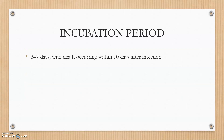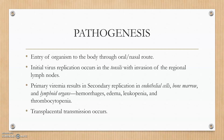The incubation period is mainly 3 to 7 days, with death occurring within 10 days after. Regarding pathogenesis: entry of the organism into the body occurs through the oral or nasal route. Initial virus multiplication occurs in the tonsils with invasion of regional lymph nodes, where they multiply and produce several copies. Through the lymphatic system, they reach the venous system, causing viremia. Primary viremia results in secondary replication in the endothelial cells, bone marrow, and lymphoid organs, leading to hemorrhages, edema, anasarca, leukopenia, and thrombocytopenia. Transplacental transmission also occurs — the mother can pass the infection to the embryo in the womb.